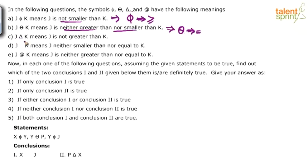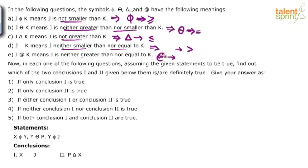Next, J delta k means J is not greater than k. Delta means not greater — if it is not greater, it can be lesser or equal, so delta means less than or equal. J space k means J is neither smaller nor equal, so space means greater. And J at-the-rate k means J is neither greater nor equal — neither greater nor equal means smaller, so at-the-rate means less than. You have to find out the meaning of each of these symbols.